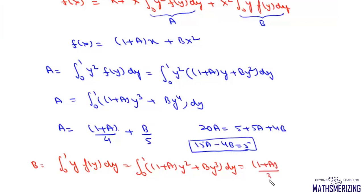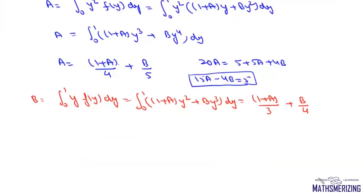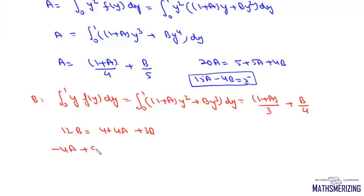Integrating and evaluating from 0 to 1 gives b = 1/2 + a/3 + b/4. Multiplying through by 12: 12b = 6 + 4a + 3b, which simplifies to the second linear equation: −4a + 9b = 4.